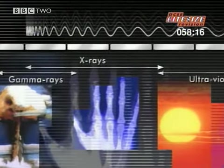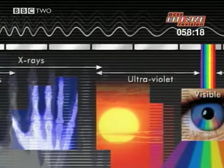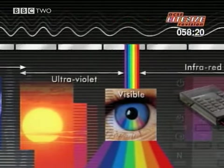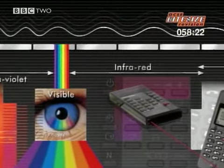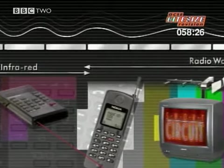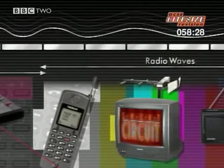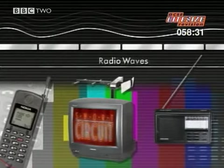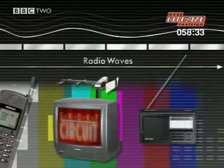Travelling at the speed of light, 300 million metres per second, are many different kinds of waves. The visible spectrum is only a small part of the electromagnetic spectrum. All these waves have the same properties, but it's the wavelength that determines how they're used.